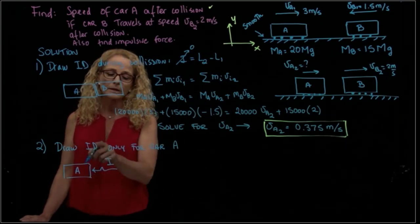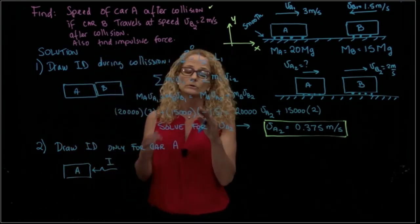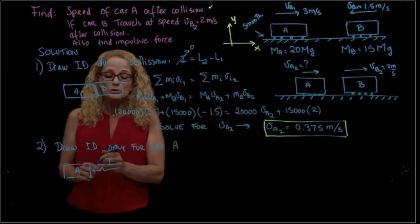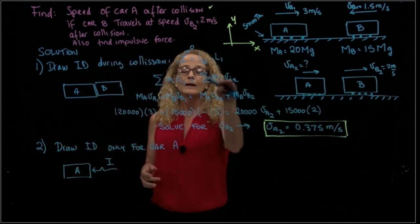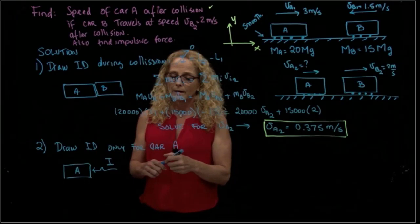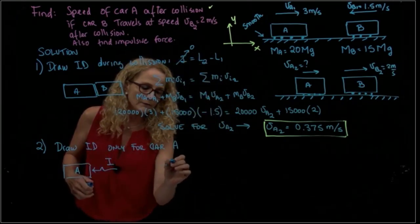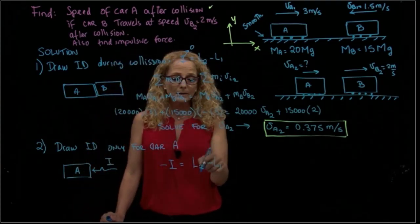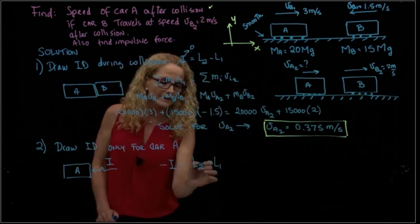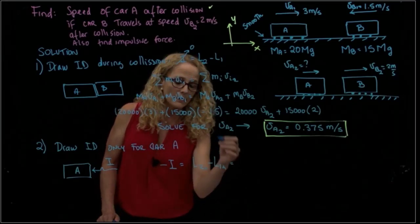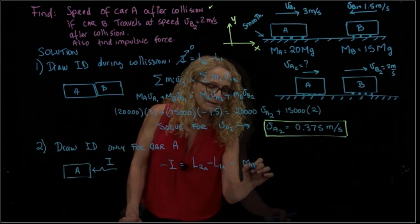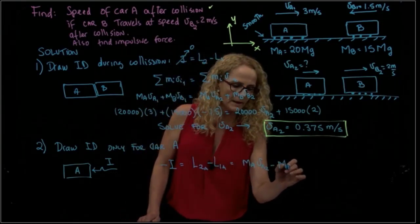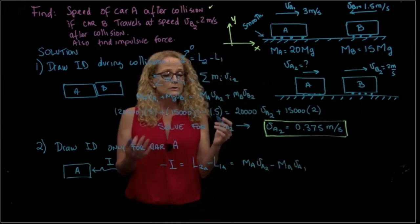Here we apply the same equation, but we do have an impact. The negative impact equals the difference between the linear momentum, but only for car A. So that's mass A times velocity A2 minus mass A times velocity A1. See the difference?